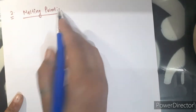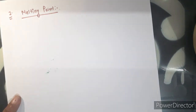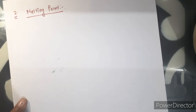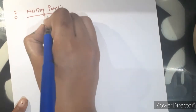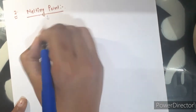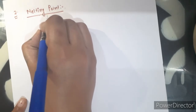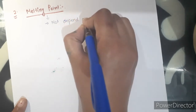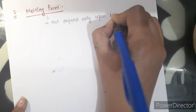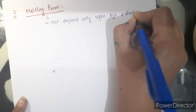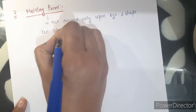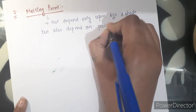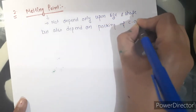The next property is melting point. Melting point also increases with the increase in number of carbon atoms, because van der Waals forces of interaction increases. But the trend in case of melting point is not regular, because melting point does not depend only upon size and shape of a molecule.